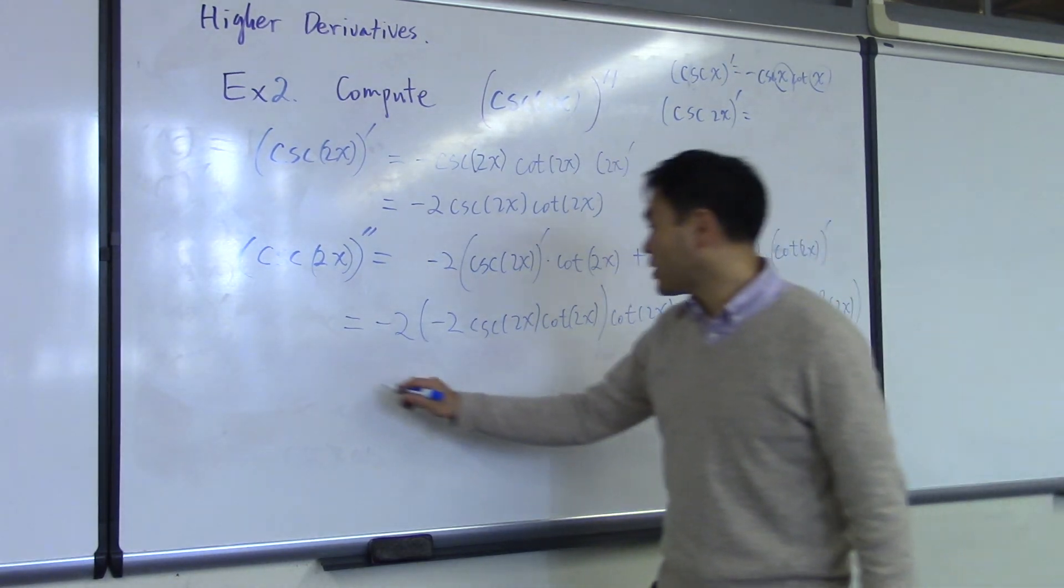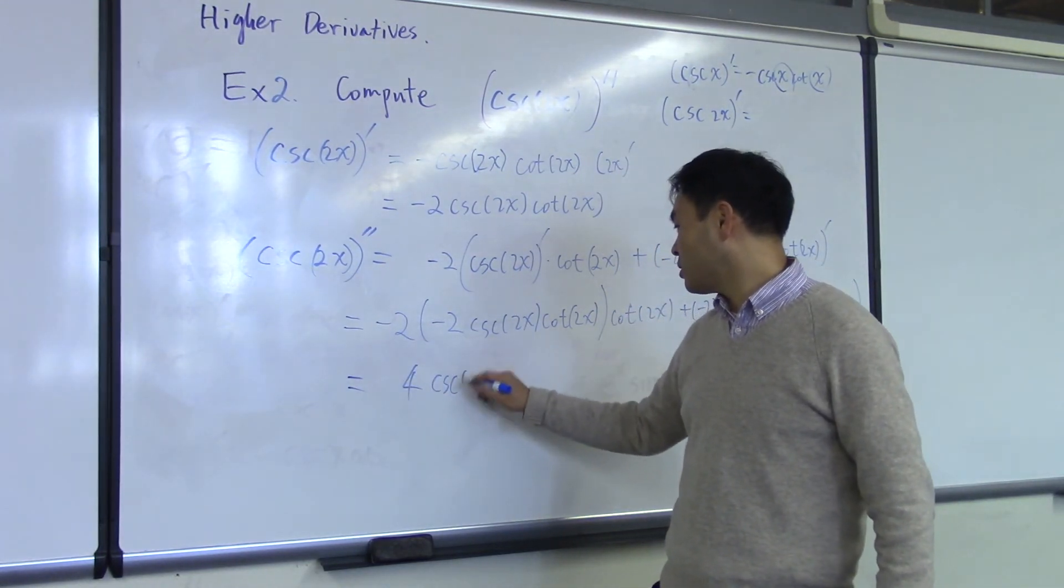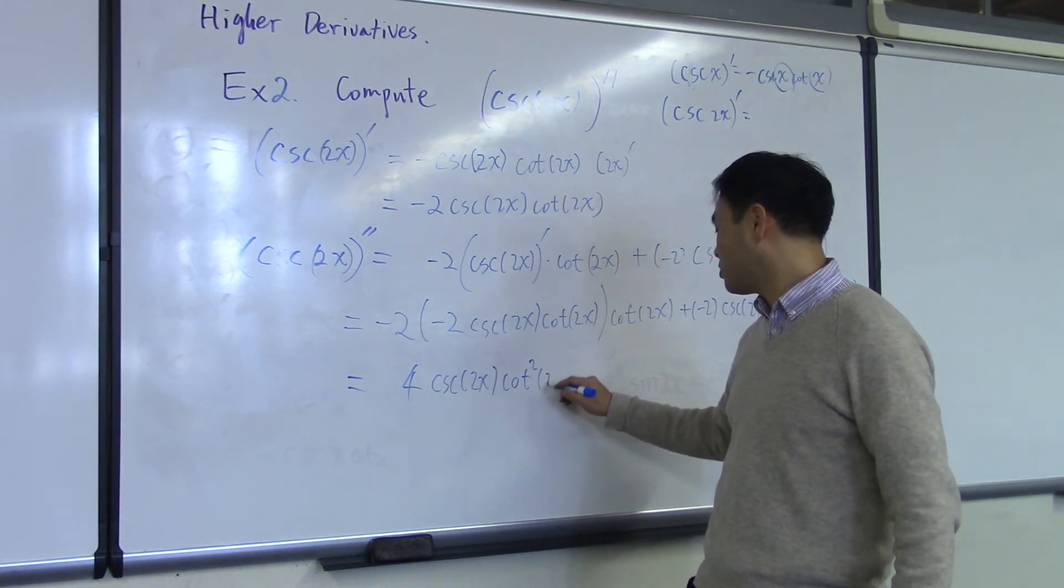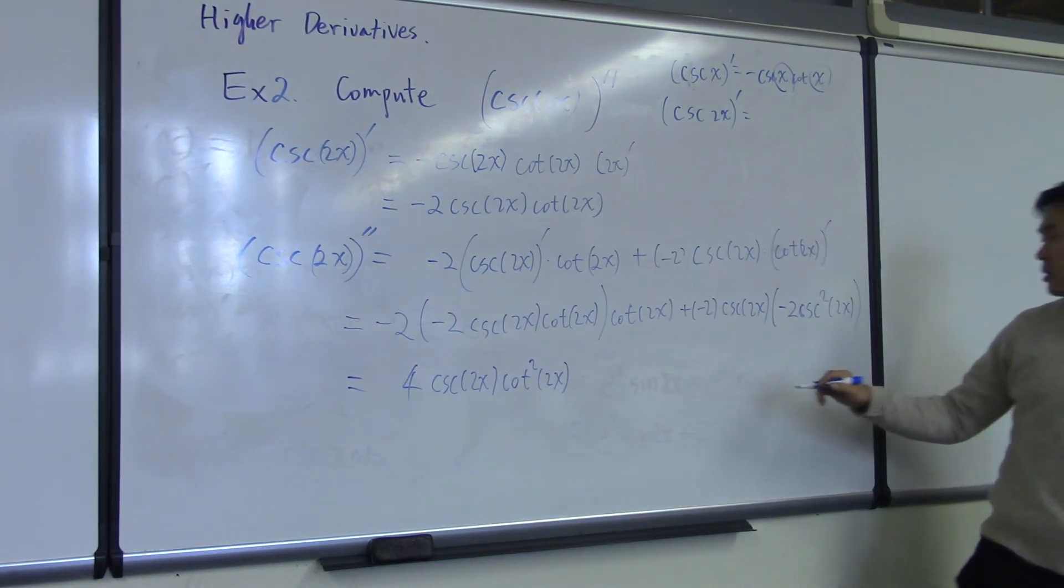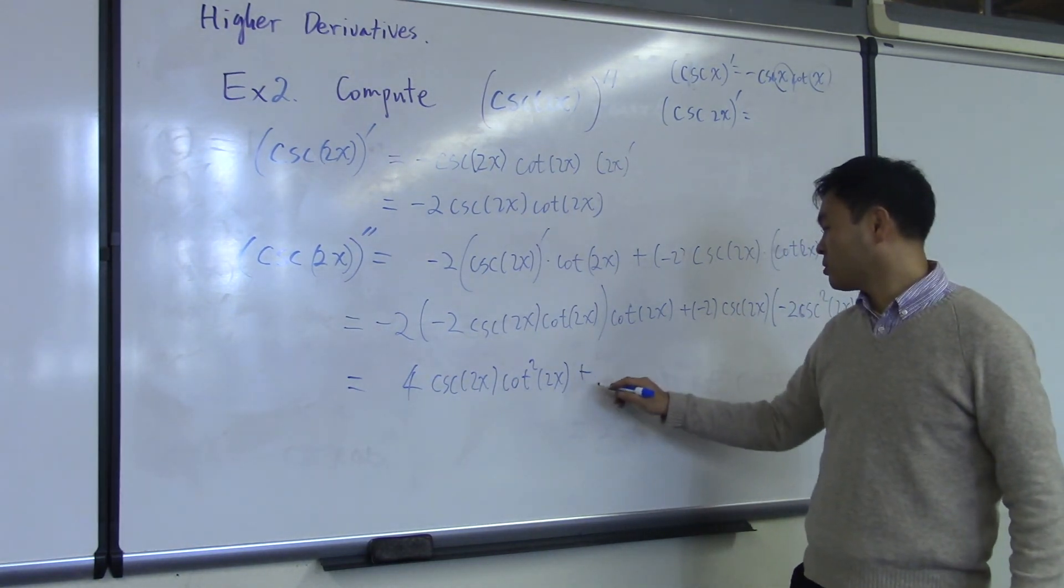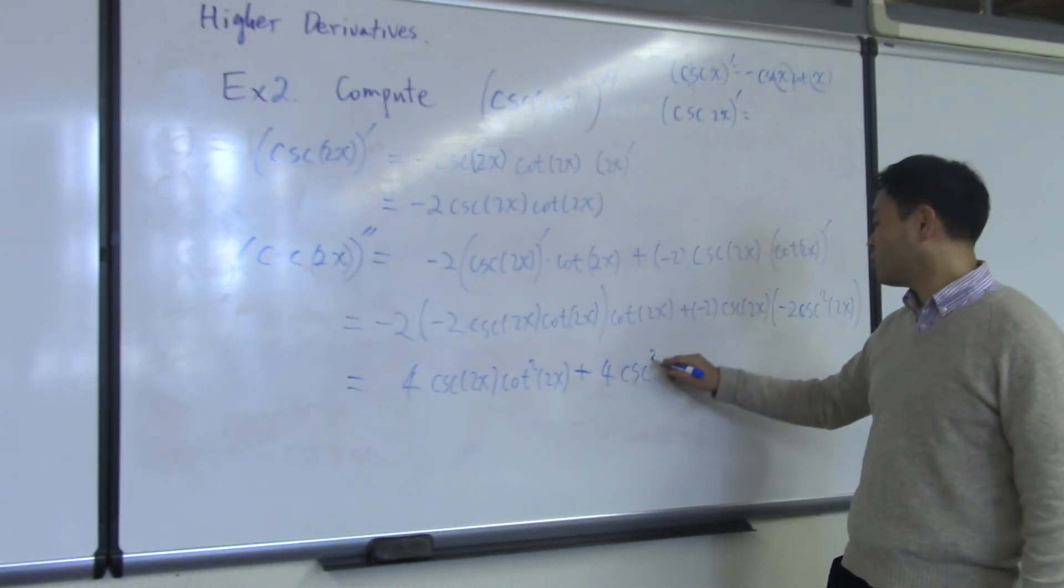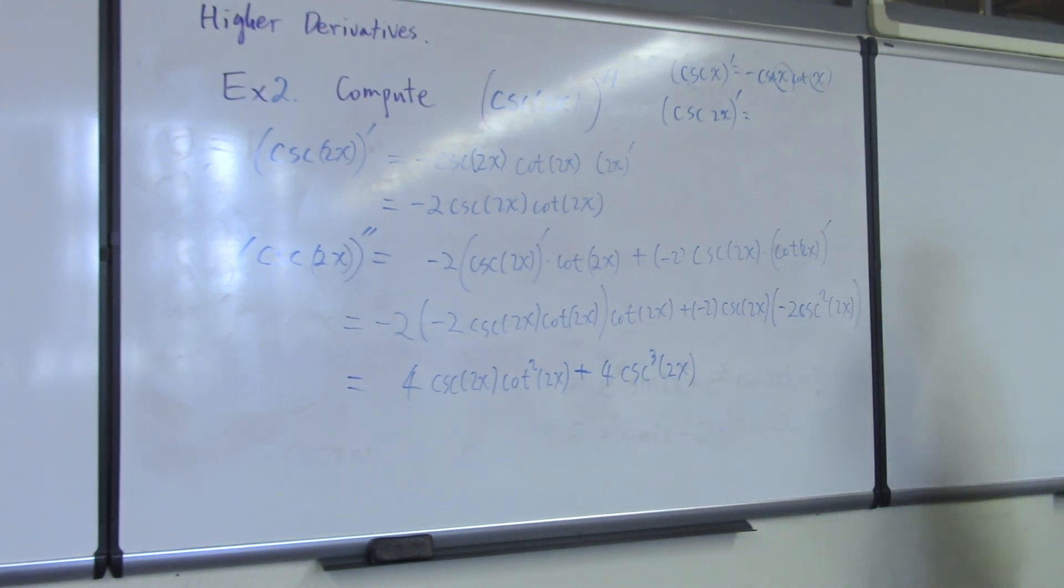Now let's simplify this. This is 4 cosecant of 2x times cotangent squared 2x, whereas this one, that's 4 plus 4 cosecant cubed of 2x. That's the answer.